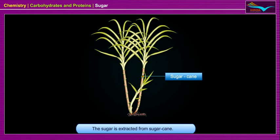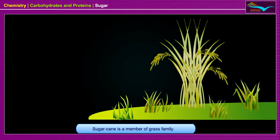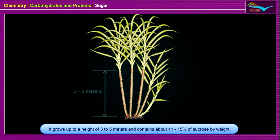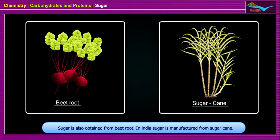The sugar is extracted from sugarcane. Sugarcane is a member of the grass family. It grows up to a height of 3 to 5 meters and contains about 11 to 15 percent of sucrose by weight. Sugar is also obtained from beetroot. In India, sugar is manufactured from sugarcane.